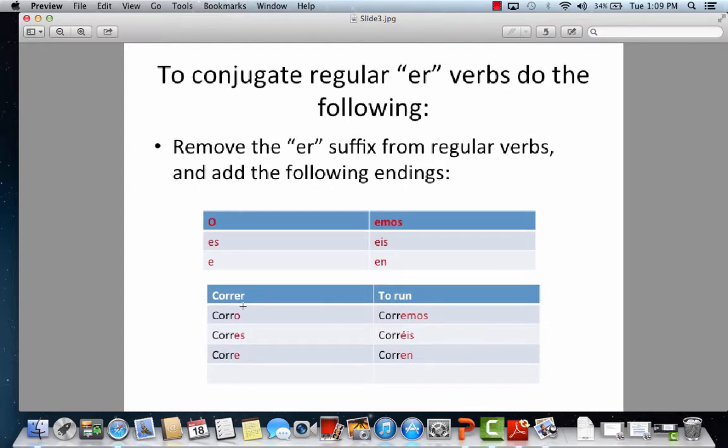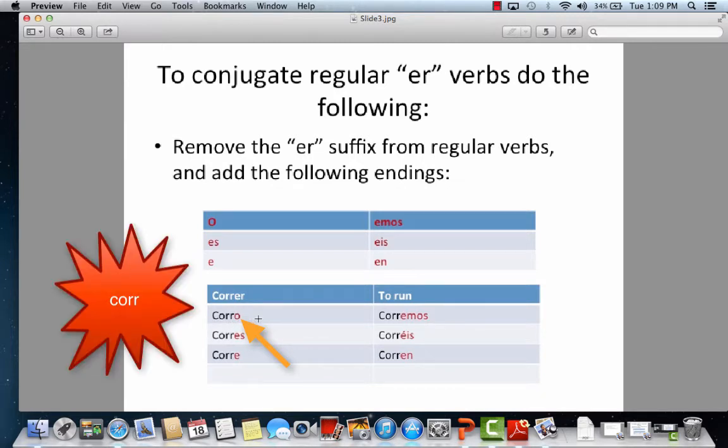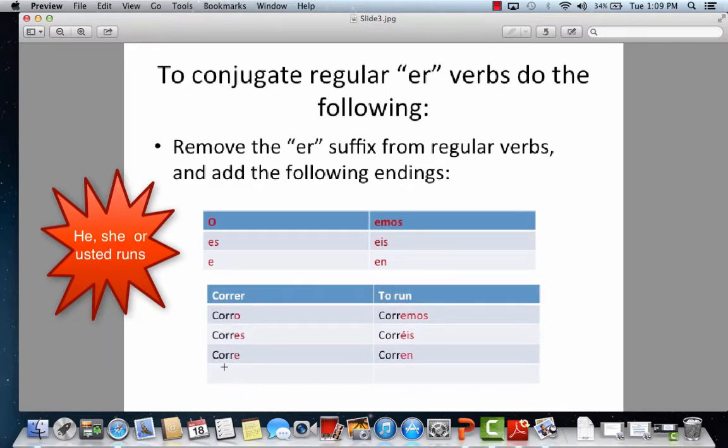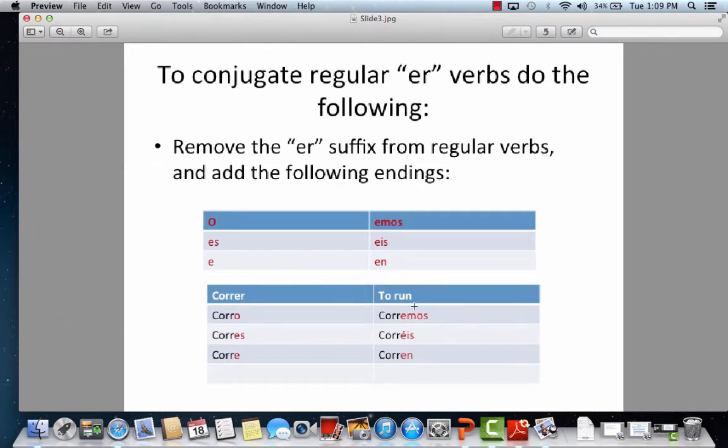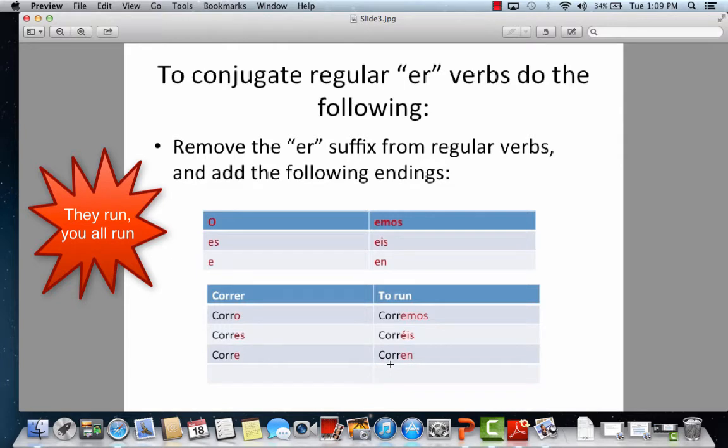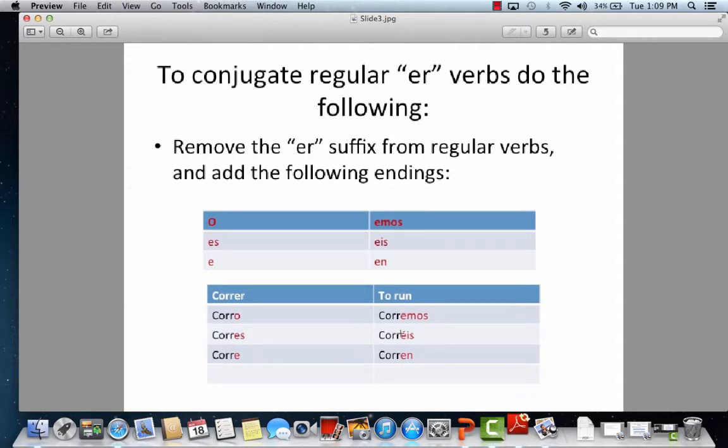So it goes like this. Attach the letter O to the stem of correr, which is C-O-R-R, and you'll be saying I run. Attach the ES to the stem, and you'll be saying you run. Attach the E to the stem, and you'll be saying he runs, she runs. Attach the EN to the stem, and you'll be saying they all run, or you all run. Remember, corres means you all run, but we don't use it in Latin America. And this is what you do to conjugate an ER verb.